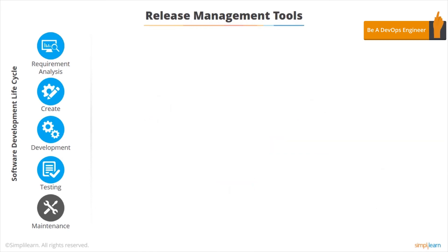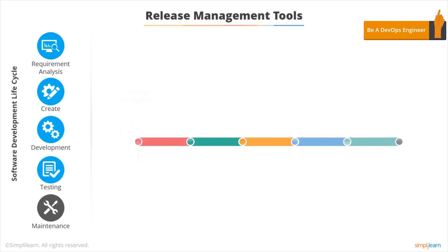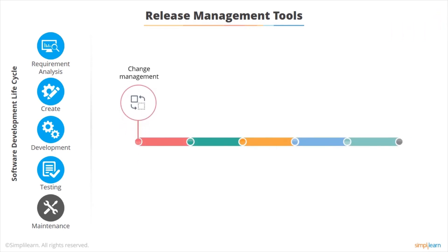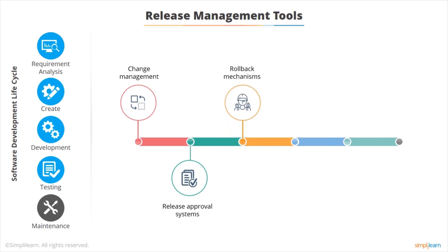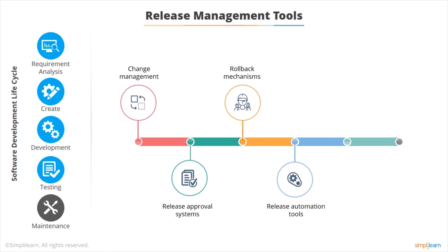We've got release management tools which are also very important. Change management systems ensure we don't make changes into production unless they've been fully documented and approved. We need approval systems to approve releases, and important rollback mechanisms — if we deploy an erroneous system into production, we need to get back to the previous version as quickly as possible. We need to automate the release process, and we also need to be able to schedule tasks so we can run various components of the system at the right time and in the right sequence.